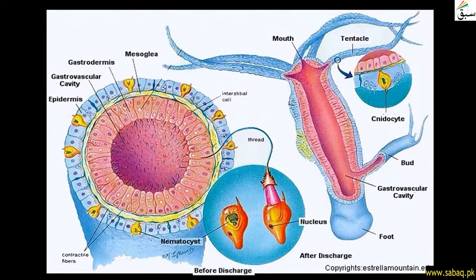If we talk about transportation, we see the hydra structure in detail. Regarding food intake, hydra has special type cells in the outer layer which can help in prey capture and food intake.